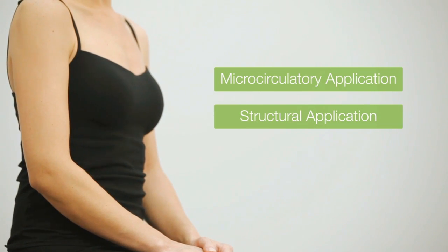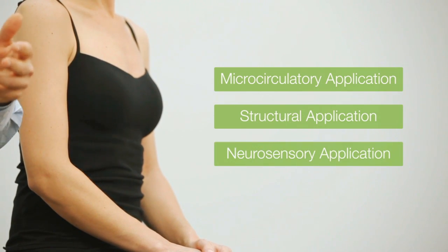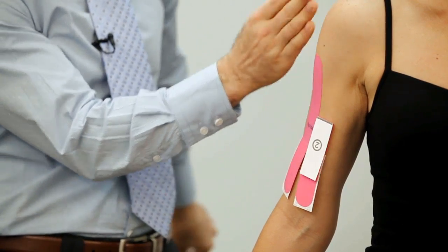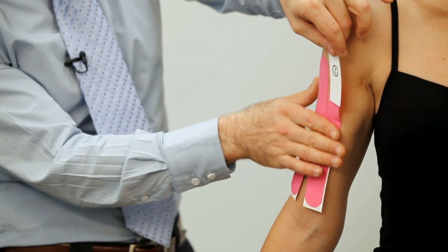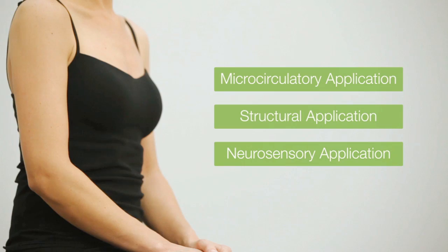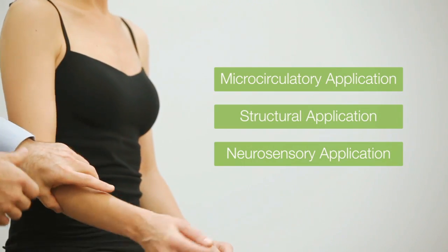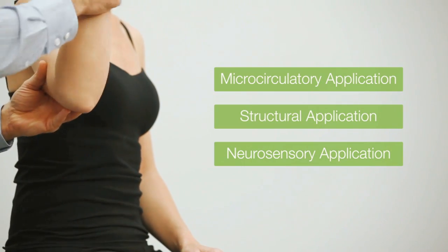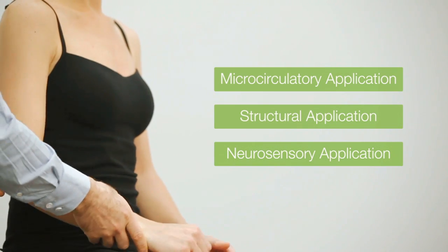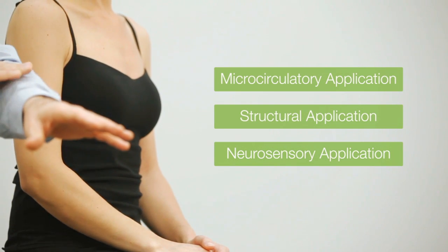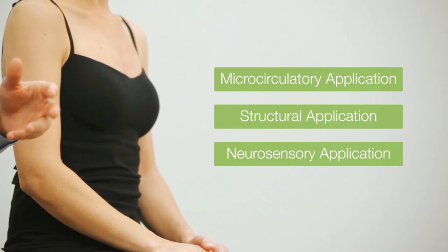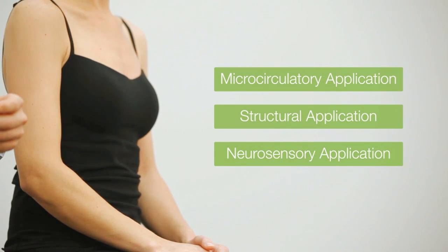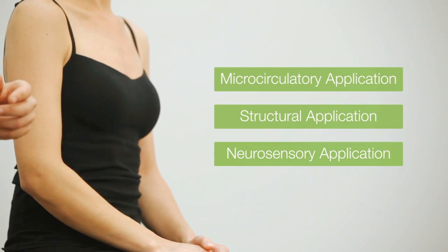The third category is neurosensory applications, and is really the most important category for which kinesiology taping can be applied. Neurosensory applications are where you apply the tape so that it doesn't impede any range of motion, allows for full freedom of movement, and the tape stimulating the contact surface of the skin is activating sensory gating mechanisms to help reduce discomfort experienced by the patient and also improve and normalize muscle activation and control.